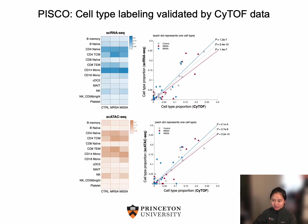In validation, given the CyTOF data collected from the same samples, we confirmed that PISCO-estimated cell type proportion is statistically correlated to the actual proportion, indicating the accuracy of PISCO at sample integration and labeling in both the single-cell RNA assay and the single-cell ATAC assay.